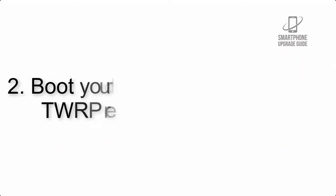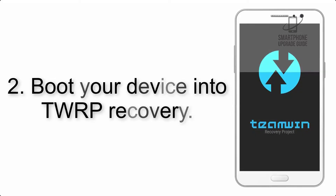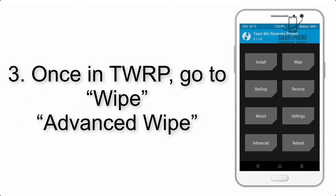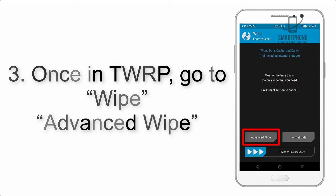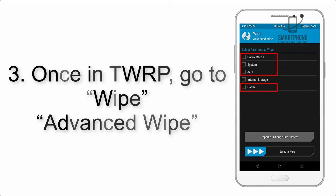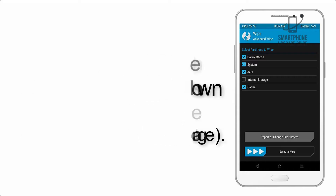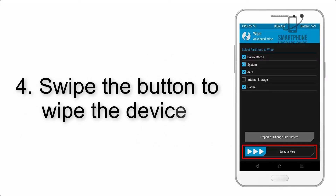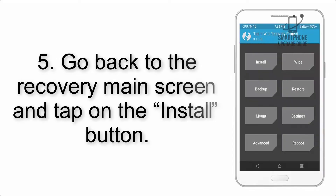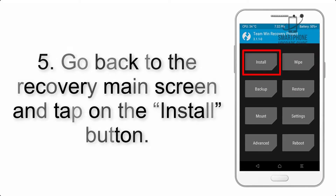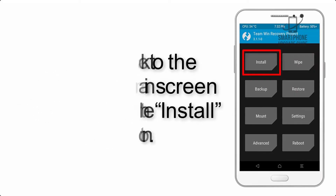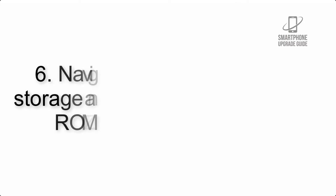Step 2: Boot your device into TWRP recovery. Once in TWRP, click on Wipe, then Advanced Wipe, and select the checkboxes as shown in the image, excluding internal storage. Step 4: Swipe the button to wipe the device. Step 5: Go back to the recovery main screen and tap on the Install button.